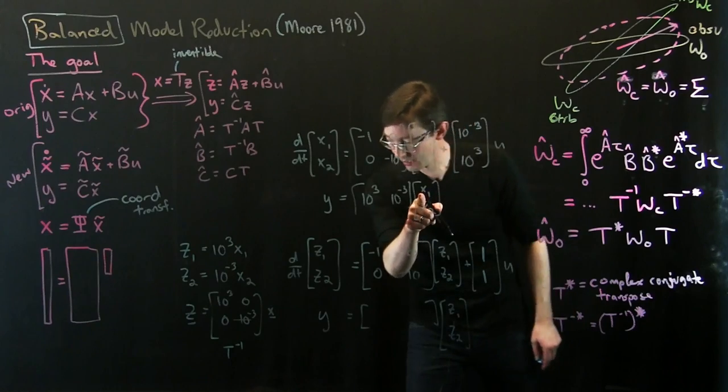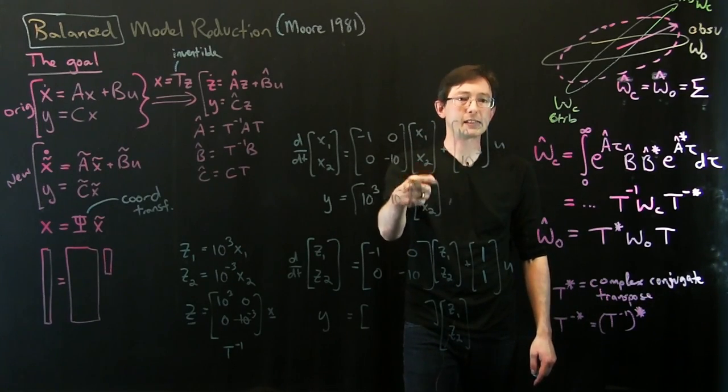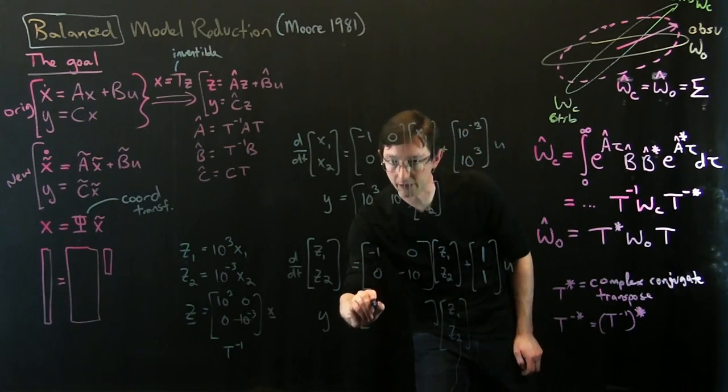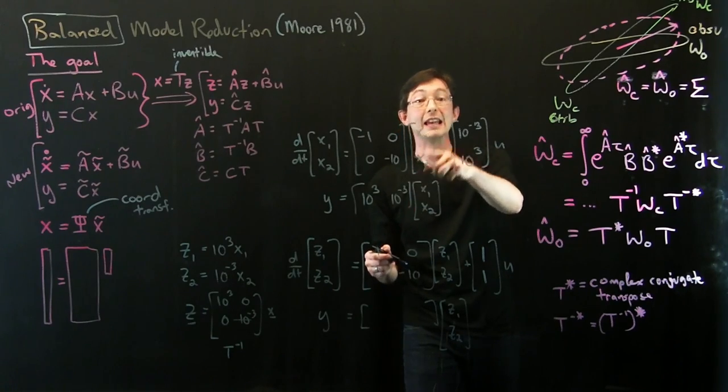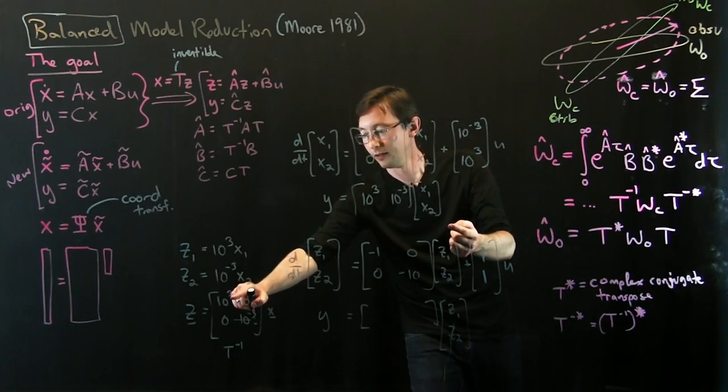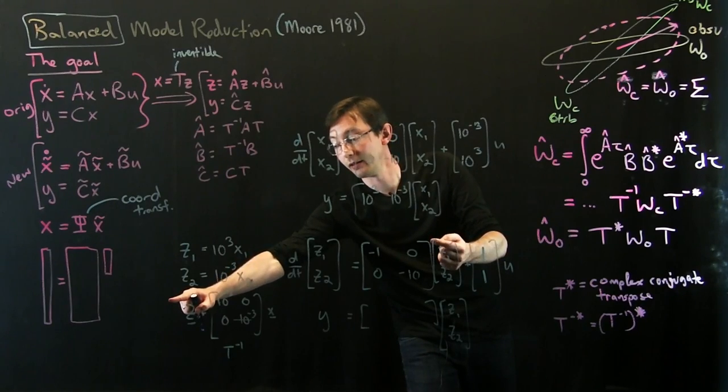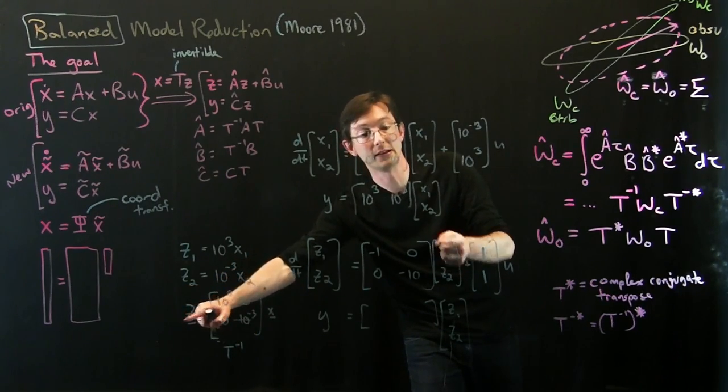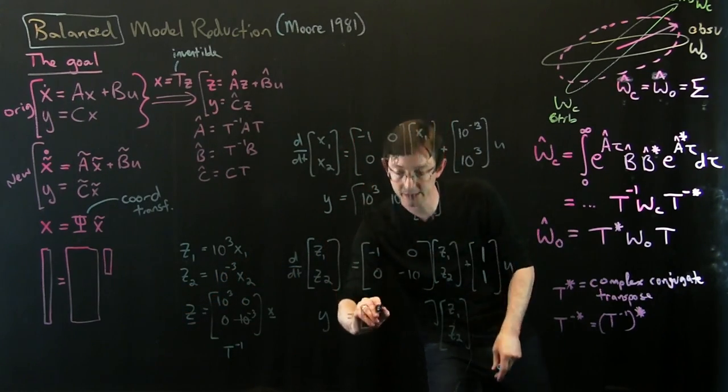Similarly, if I make this one, if I scale this one up and this one down, because x1 is the inverse of T, I have to divide z1 by a thousand and multiply z2 by a thousand. These also get balanced to 1 and 1.